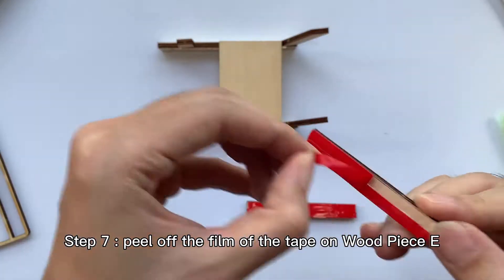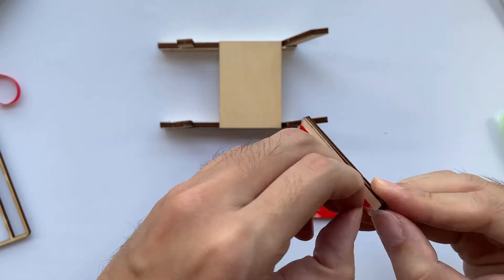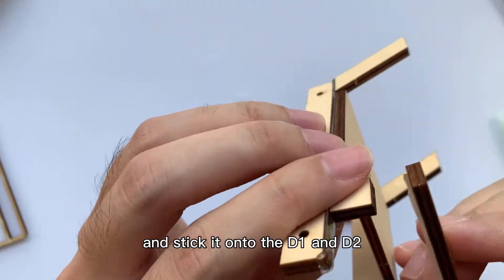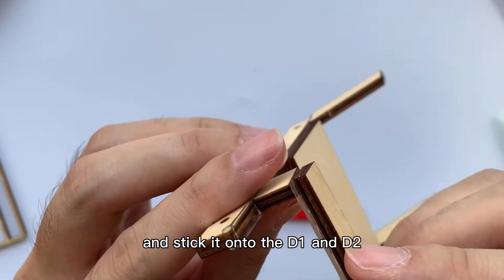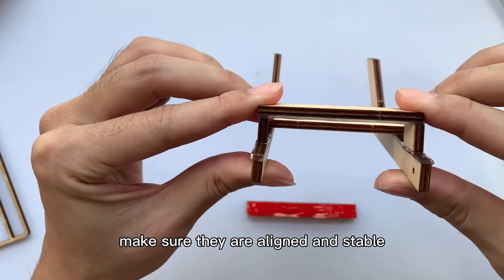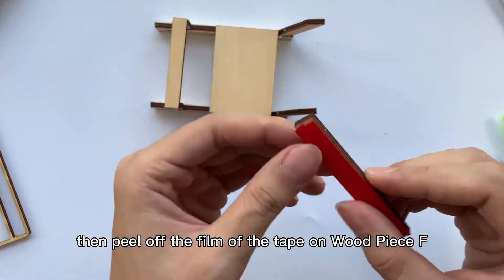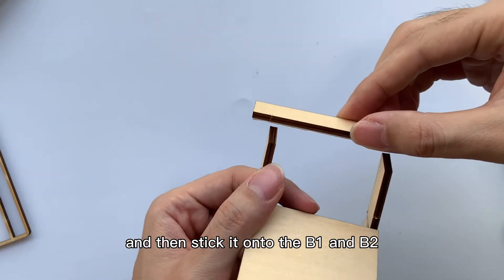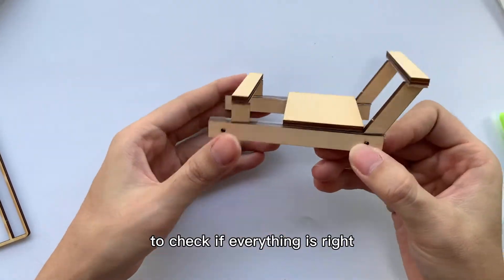Step 7: Peel off the film of the tape on wood piece E and stick it onto the D1 and D2. Make sure they are aligned and stable. Then peel off the film of the tape on wood piece F, and then stick it onto the B1 and B2 to check if everything is right.